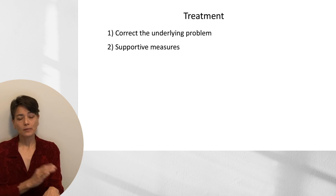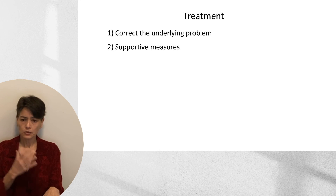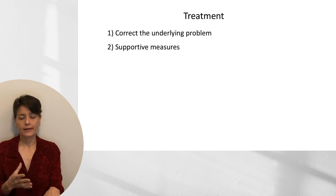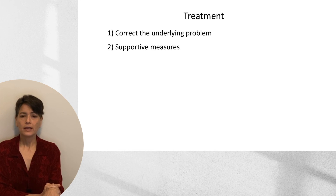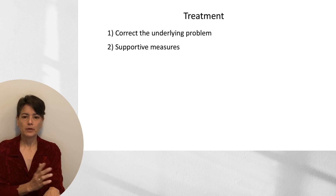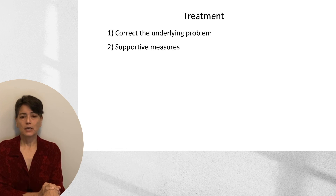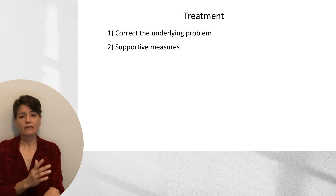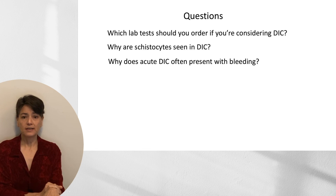As a pathologist, I don't talk a lot about treatment, but I need to close the circle for you. For DIC, the most important thing is to correct the underlying problem, which can help DIC to resolve. You also want to provide support — volume for patients with ABO incompatibility transfusion, respiratory support, and if a patient is bleeding, consider platelets and/or fresh frozen plasma to provide clotting factors. If they have thrombosis, think about anticoagulation.